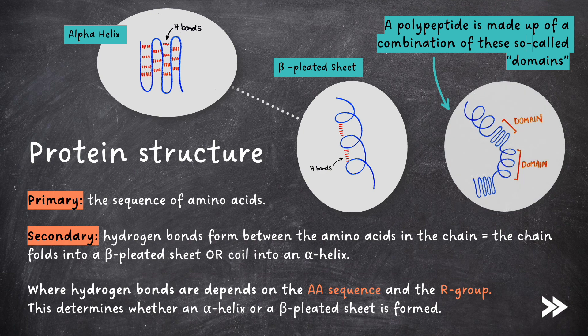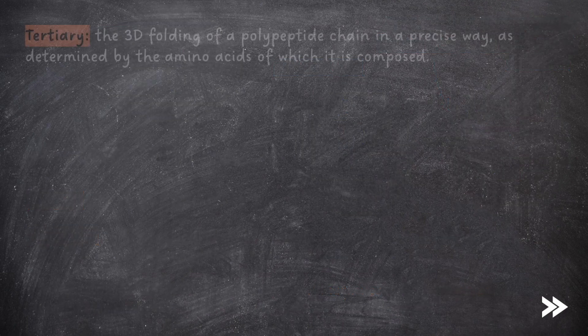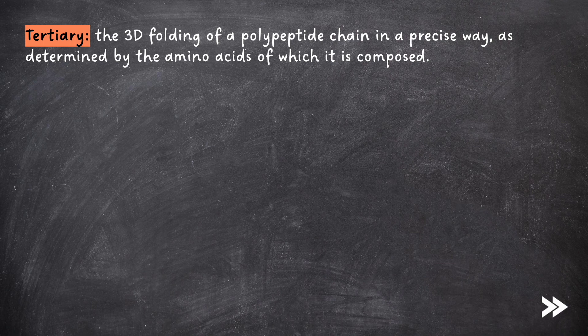It is this which determines whether an alpha helix or a beta-pleated sheet is formed. A fully functioning polypeptide is made up of a combination of these so-called domains, where each domain is either a section of alpha helix or beta-pleated sheet. Next, we have the tertiary structure, which is the 3D folding of the polypeptide chain in a precise way, as determined by the amino acids of which it is composed.